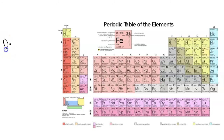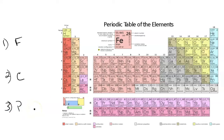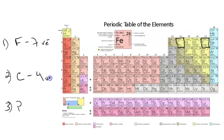Determine the number of valence electrons for fluorine, carbon, and phosphorus. Fluorine is in group 17, so it will have seven valence electrons. Carbon is in group 14, and looking at the last digit in the group number, it will have four valence electrons. And phosphorus is in group 15, and looking at the last digit in the group number, it will have five valence electrons.